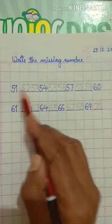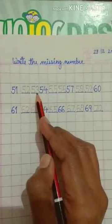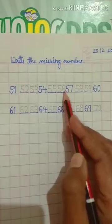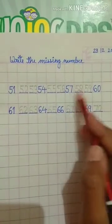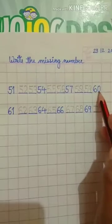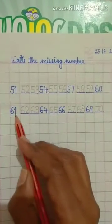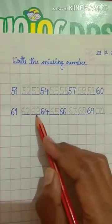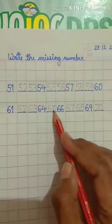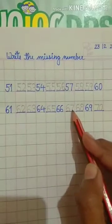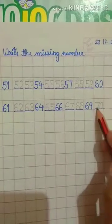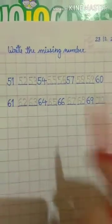51, 51, 52, 52, 53, 53, 54, 54, 55, 55, 56, 56, 57, 57, 58, 58, 59, 59, 60, 60, 61, 61, 62, 62, 63, 63, 64, 64, 65, 65, 66, 67, 67, 68, 68, 69, 69, 70, 70. Okay.